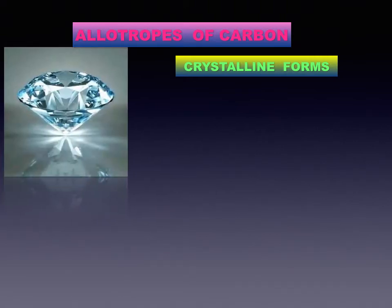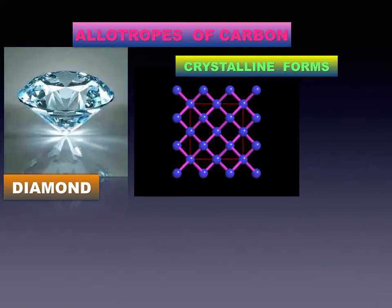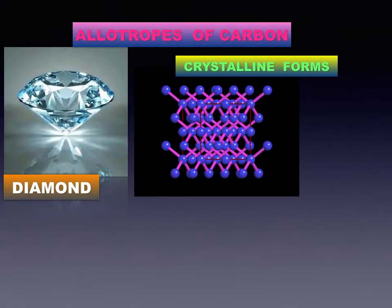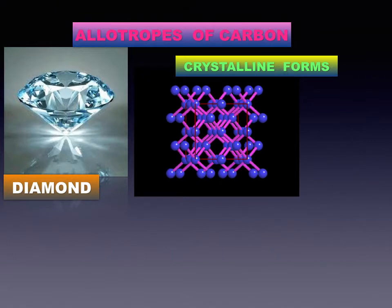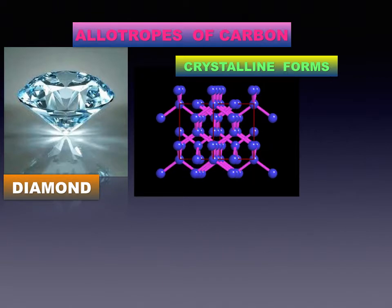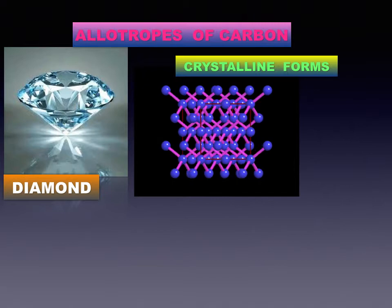The first crystalline allotrope we shall see is diamond. Diamonds are found in India, mainly in Golconda in Karnataka and Panna in Madhya Pradesh. Diamonds are also found in South Africa, Brazil, Belgium, Russia, and America. In diamond, every carbon atom is bonded to four neighboring atoms by covalent bonds. Therefore, diamond has a tetragonal three-dimensional structure which makes it very hard.